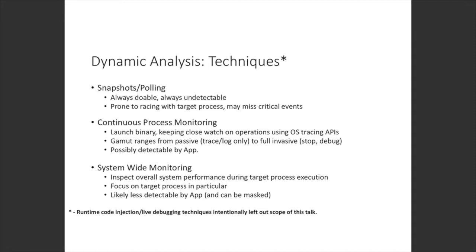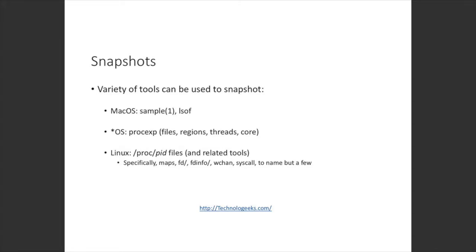For snapshots on macOS, there's a tool called Sample, which attaches periodically and samples every process — typically once per millisecond over 10 seconds — giving you a stack trace of what the process is doing. There's also lsof (list open files), which iterates over all processes and open inodes — including devices and sockets — and dumps them out. It works on both Linux and macOS.